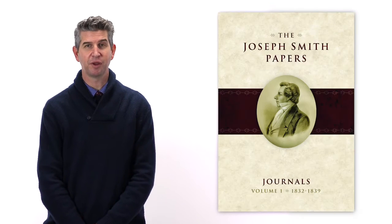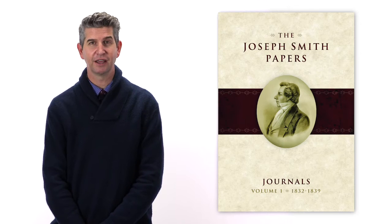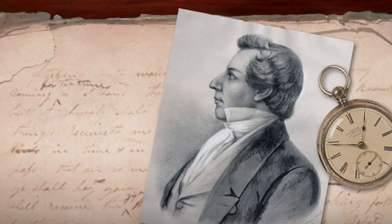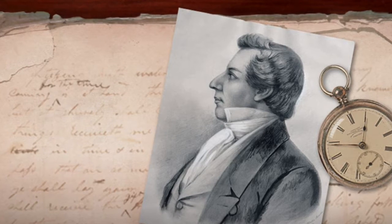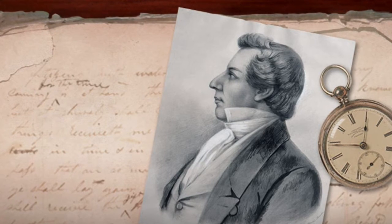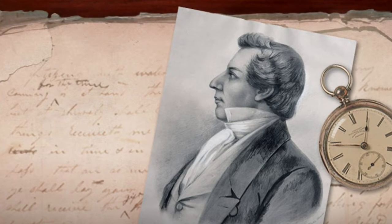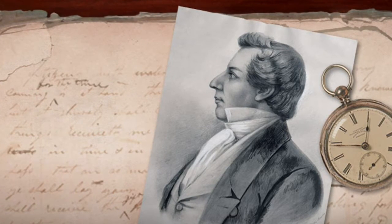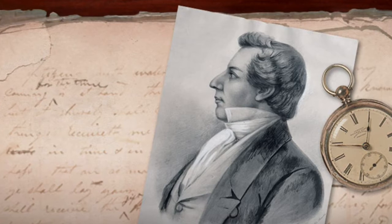Where do you go to get context? Let me give you a few great places. One of them is the Joseph Smith Papers website. When you go to the Joseph Smith Papers website, a team of historians has done great work. For every single revelation, they have given a historical introduction for that revelation.